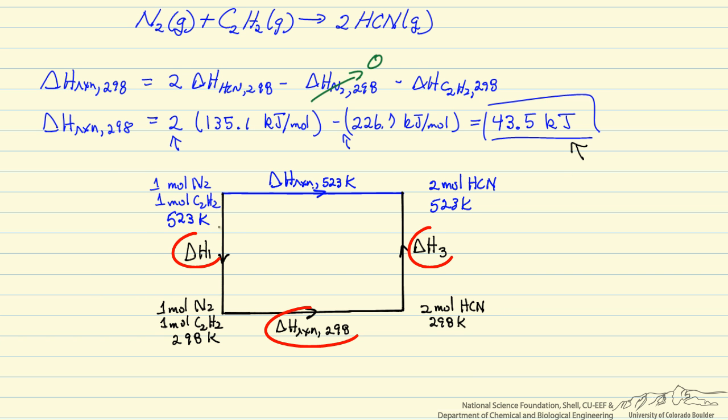And the sum of the 3 delta H's, the black pathway, is going to be the same as delta H for the blue pathway for the reaction at 523 and that is the value we wanted to determine. So we have this value we need to calculate the changes from the heat capacities and the temperature change.